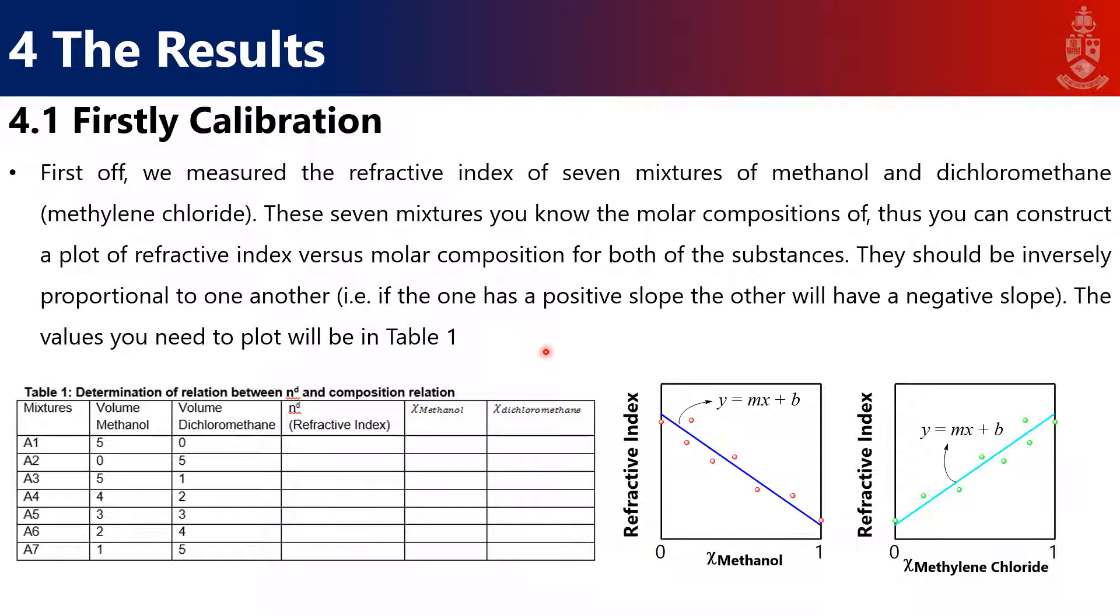Turning to the results, in the first aspect you will do a calibration with some known mixtures. You make up known mixtures with known mole fractions of methanol and dichloromethane and measure their refractive index. You should get two linear graphs with y = mx + b fits.